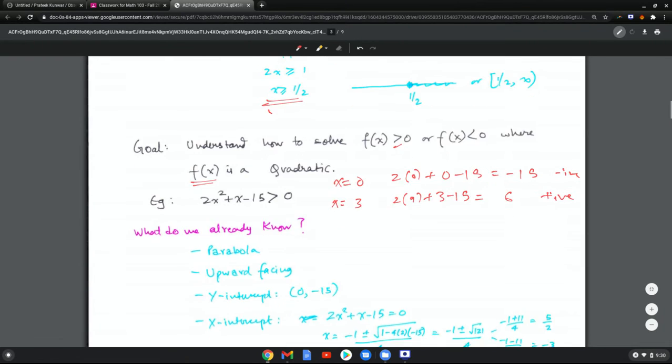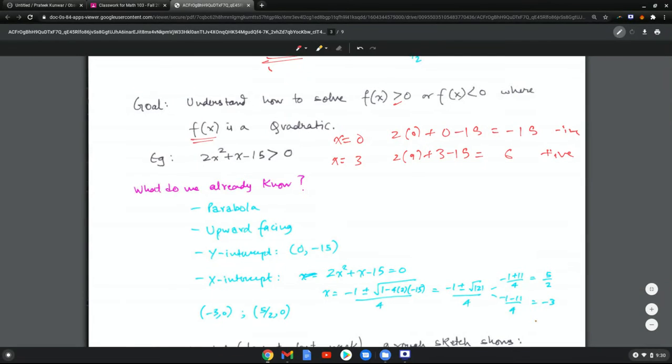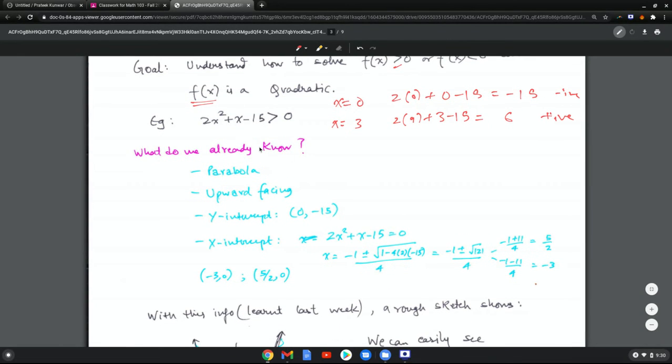So let's start by recollecting what we already know. What do we know about the shape of this graph? We know it's a parabola. Why? Because it's a quadratic. We know it's upward facing. Why? Because the coefficient of x squared is positive 2.